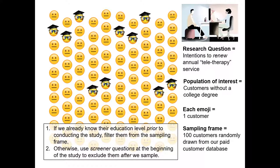Keep in mind, we have a sampling frame of all paid customers, but we only want to study those individuals who do not have a college degree. There are really two scenarios. In the first scenario, we might have already known these individuals' education level prior to conducting our study. Maybe the company already tracked someone's highest level of educational attainment as part of their CRM system. If that's the case, we merely exclude those individuals, filter them out from our sampling frame, and then engage in simple random sampling.